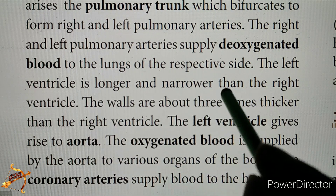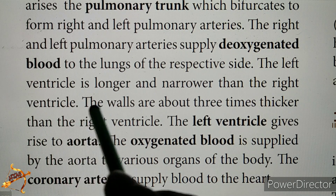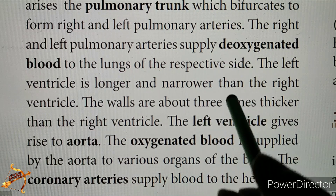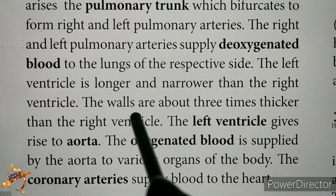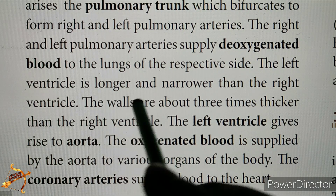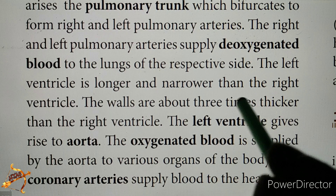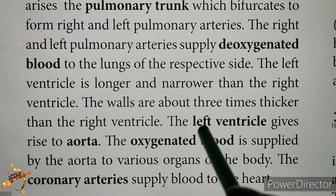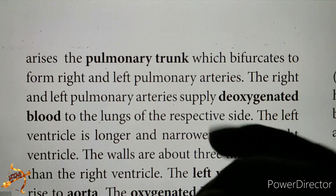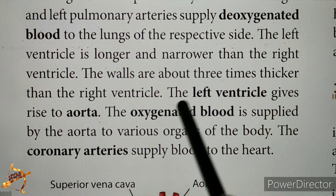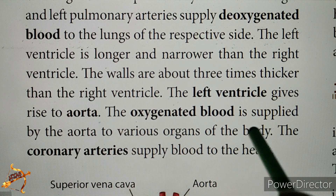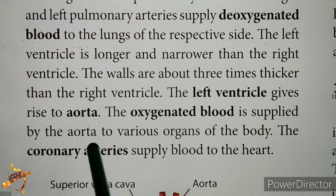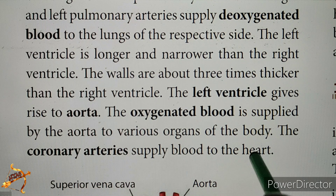The left ventricle is longer and narrower than the right ventricle, and its walls are 3 times thicker than the right ventricle. The left ventricle gives rise to the aorta. The oxygenated blood is supplied by the aorta to various organs of the body. The coronary artery supplies blood to the heart itself.